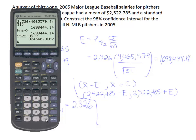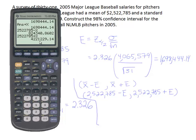I bring up that calculation again, but this time I add the error in. Our answer then becomes 824,340 up to 4,221,000.